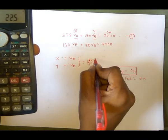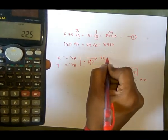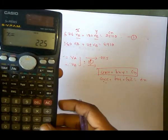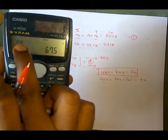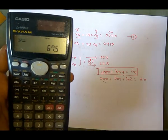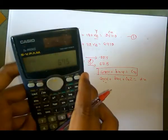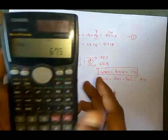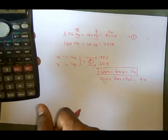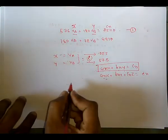The answer for x, which is VA, is 22.5. Press again for y to get VB, which equals 67.5. That's how easily we can find two unknowns with the calculator. You can apply this method to your own examples.